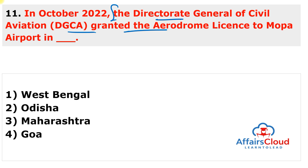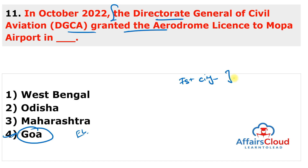In October 2022, the Directorate General of Civil Aviation (DGCA) granted the aerodrome license to the Mopa Airport situated in Goa to commence flight operations. Goa is the first Indian state or city to have two airports that will soon see regular commercial flights.